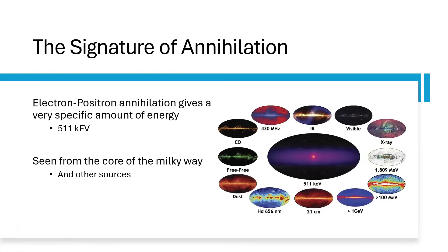When that happens, particularly with electrons and positrons annihilating with each other, you get a very specific amount of energy. Because the total mass of both particles is converted into energy, you get 511 kilo-electron-volts. An electron-volt is the amount of energy that an electron would gain accelerating across a potential of a volt, and you get 500,000 of those if you turn a pair of electron and anti-electrons into pure energy. The diagram on the right is our galaxy spread out across the sky in a whole range of different wavelengths — from 21-centimetre hydrogen radio waves through to gamma rays.